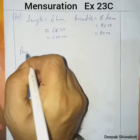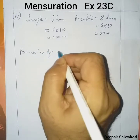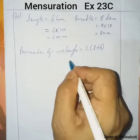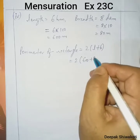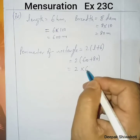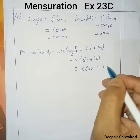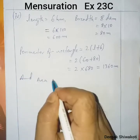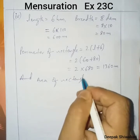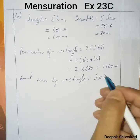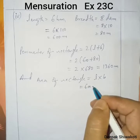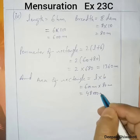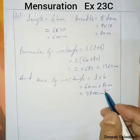Now, perimeter of rectangle is equal to 2 into (length plus breadth). Length is 600 and breadth is 80, so 2 into 680 gives us 1360 meter. Area of rectangle is equal to length into breadth, that is 600 meter into 80 meter, which equals 48,000 meter square.